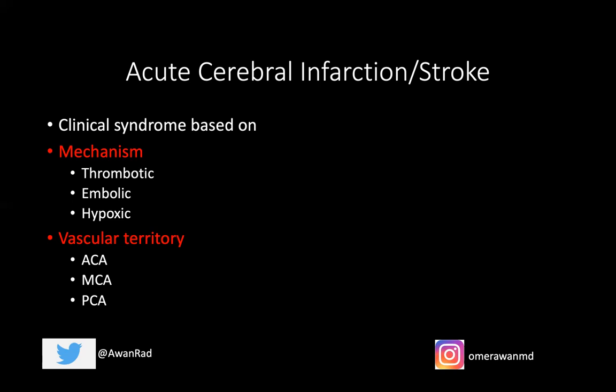There are three types of ischemic strokes, and the clinical syndrome you'll get on the USMLE will be based on the mechanism and the vascular territory involved. In terms of mechanism, there are three mechanisms of ischemic stroke: thrombotic, embolic, and hypoxic.